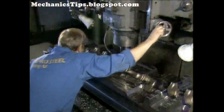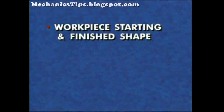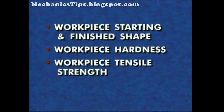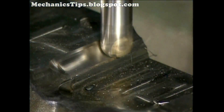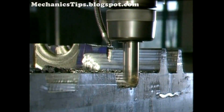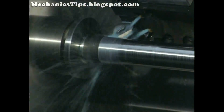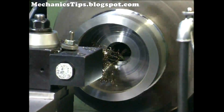To effectively select tools for machining a part, a machinist must have specific information about the workpiece such as the starting and finished shape, the hardness, the tensile strength, and abrasiveness of the material. These factors all influence the interaction between the tool and the work. The machinist also needs to know whether the workpiece material breaks into short chips easily or whether it tends to flow into long, hard-to-break stringy chips.